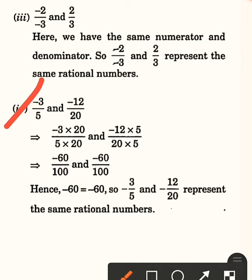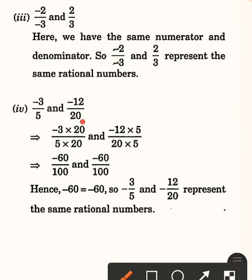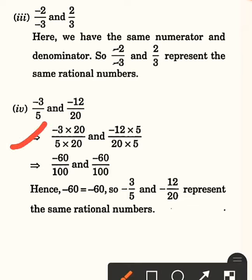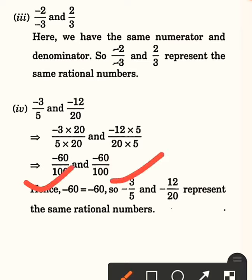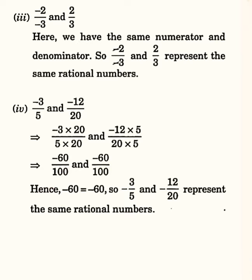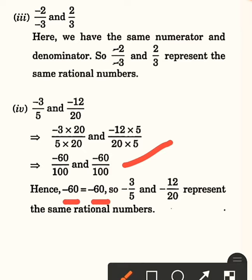Moving ahead with the 4th solution: minus 3 upon 5 and minus 12 upon 20. Again, we will do cross multiplication. So minus 3 into 20 on one side, and minus 12 into 5 on the other. The denominators 5 and 20 are multiplied for both sides. This gives minus 60 upon 100 on the first side and minus 60 upon 100 on the other. Since minus 60 equals minus 60, minus 3 upon 5 and minus 12 upon 20 represent the same rational numbers.